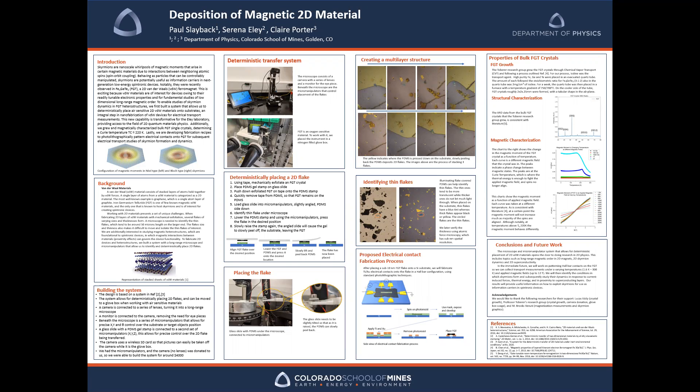My poster will provide a brief overview of the system I made and how to precisely place a 2D flake. It will also show our proposed process for creating electrical contacts on the 2D layers of FGT. In addition, I will show the structure and magnetic properties of the FGT crystals grown by the Tobler Research Group.